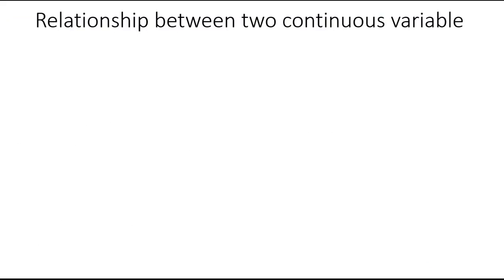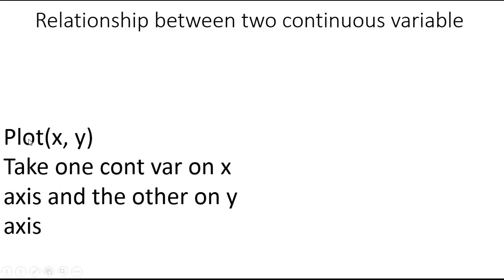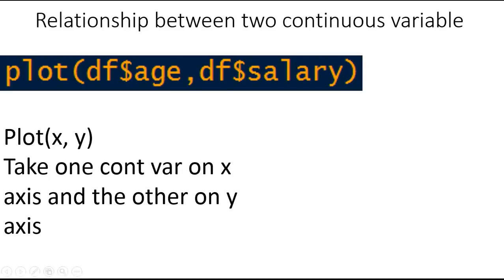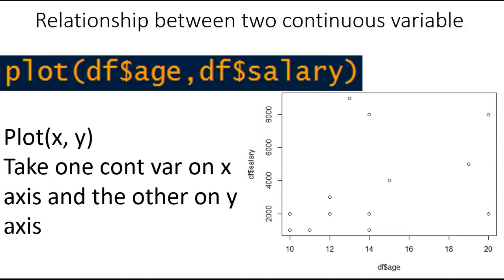Now let's find the relationship between two continuous variables. For that purpose you use the plot command but here instead of one variable you give two variables: one for the x-axis and another for the y-axis. Remember you must use a comma between every two arguments in a function. So you take one continuous variable on the x-axis and another continuous variable on y. So plot, this is the age variable on x-axis and salary on the y-axis. When you hit enter you will get a plot that tells you the relationship between two continuous variables. As you can see the relationship is almost linear except for these outliers.